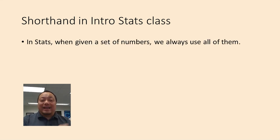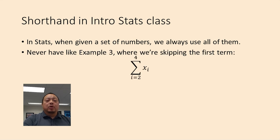In an intro to stats class, when given a set of numbers, we always use all of them. We never have a situation like example 3 where we're skipping the first term. In stats, if the set has four numbers, we always use all four numbers, not skipping any of them.